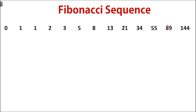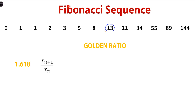These numbers by themselves are not so exciting. What's exciting is the golden ratio hidden among them. The golden ratio is 1.618, and you can get this ratio when you take a number in the sequence and divide it by the number before it. So 13 divided by 8 will give you an answer very close to 1.618. It is not very accurate for the first few sequences, but as the numbers get bigger, the ratio approximates to 1.618.